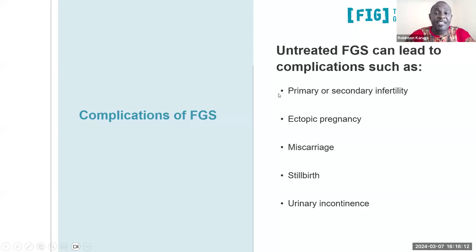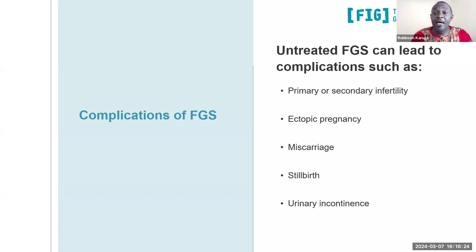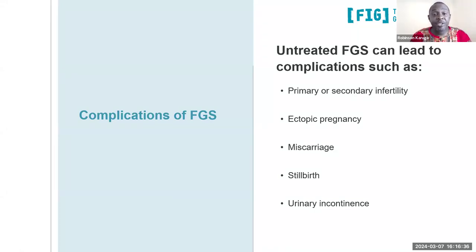If FGS is left untreated, it leads to a number of complications which also contribute to stigma and social or domestic tension. Some of these are primary or secondary infertility due to inflammation or scarring in the reproductive system, ectopic pregnancies, miscarriage, stillbirth, and this long-term inflammation could also lead to urinary incontinence. These complications are often misdiagnosed because most health workers are not aware of female genital schistosomiasis.